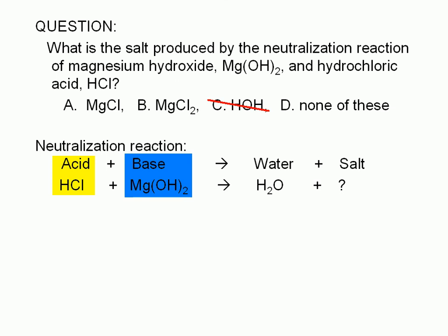In an acid-base neutralization, the salt is derived from the metal ion of the base, which is magnesium in this case, and the anion from the acid, which is chloride in this case. Therefore, in this reaction, the salt is magnesium chloride.